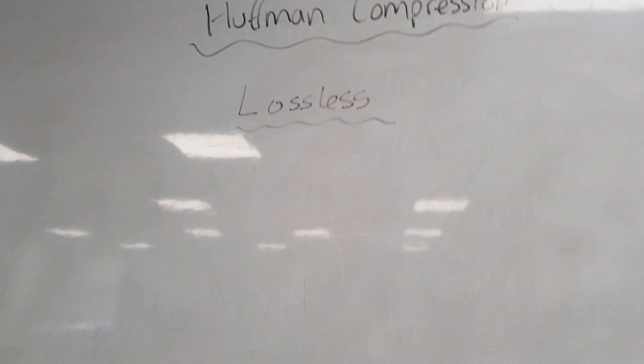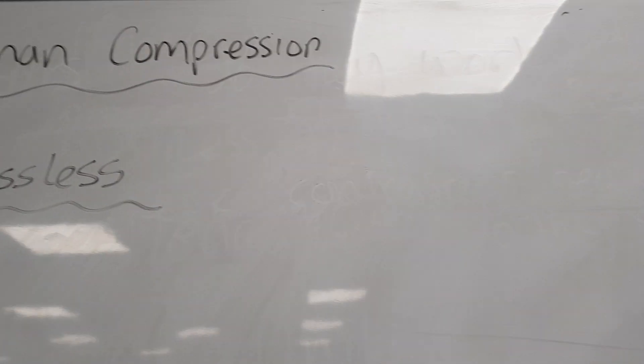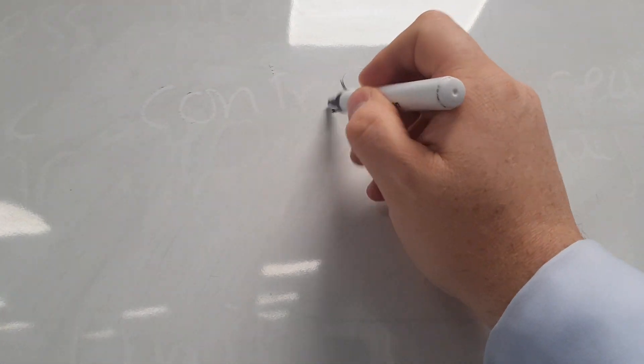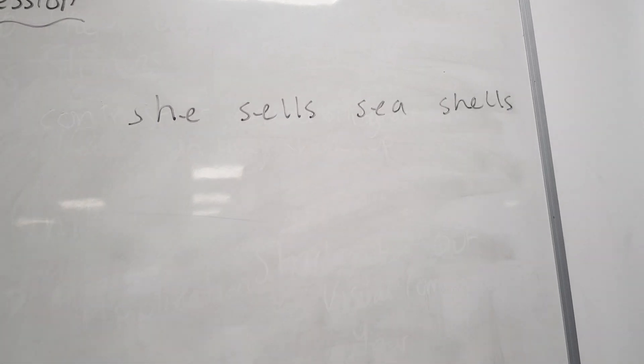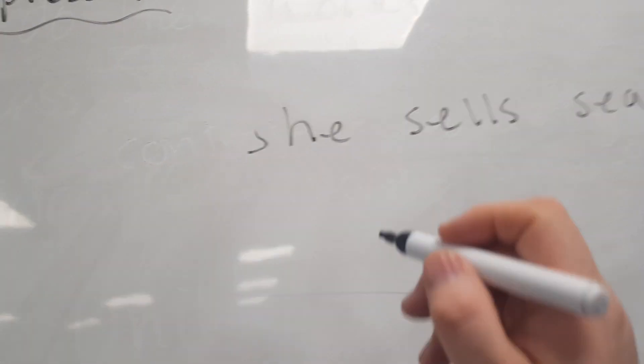So we're going to imagine that we have some text that we want to encode. We've got this: 'she sells seashells'. We're going to compress that data.